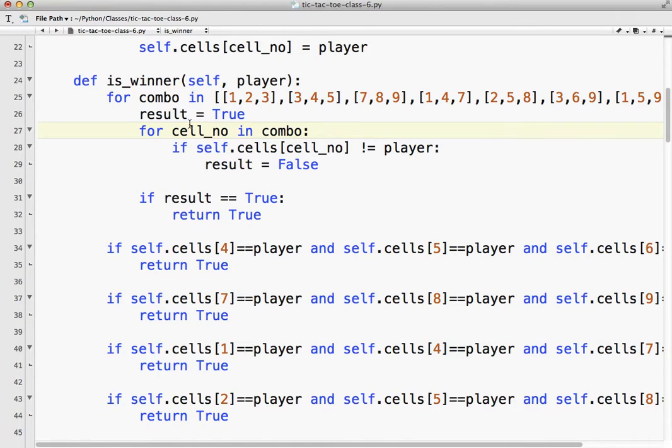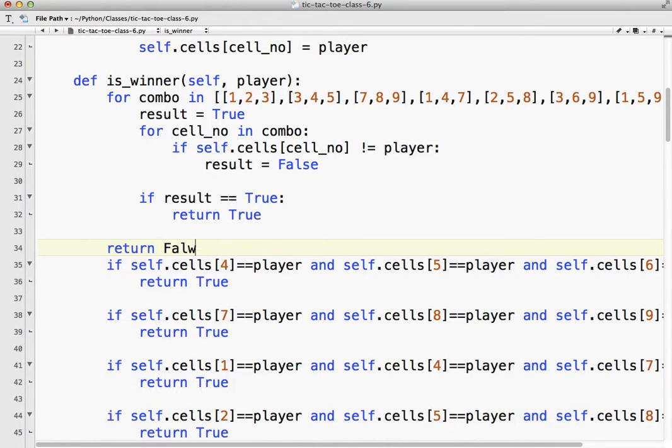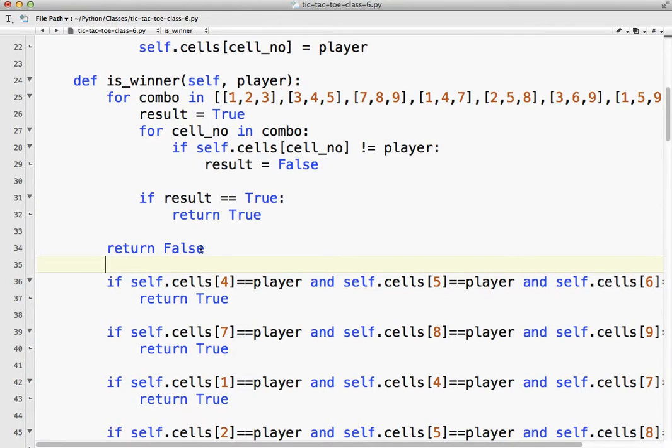So what will happen is this loop here, the first time through, combo equals 1, 2, 3. So this is 1, 2, 3. And notice the brackets. It's a list. So it'll check for that. So as soon as we get to one that's true, it's going to return true. If none of them are true, it's going to return false. So it will only get to this line, line 34 in this case, if these are all, if, you know, this is always false. Okay.